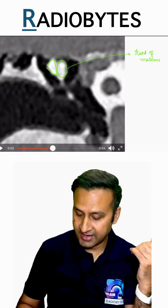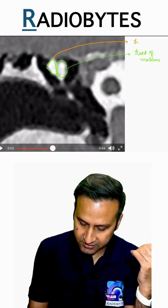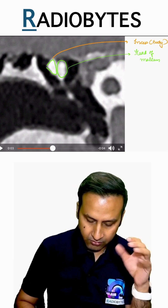We know that the head of malleus articulates with the body of incus. I can see another bone located here which is articulating with the head of malleus, and this particular bone has to be the incus — the body part of incus.